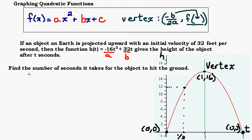When it asks you how long it takes for the object to hit the ground, when it's saying hit the ground, that tells you that the height has to be 0. Height equals 0. From the graph, we know the answer is going to be 2 seconds. But you may not have access to a graph.